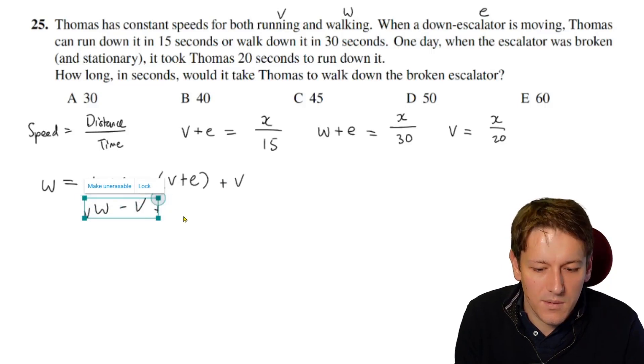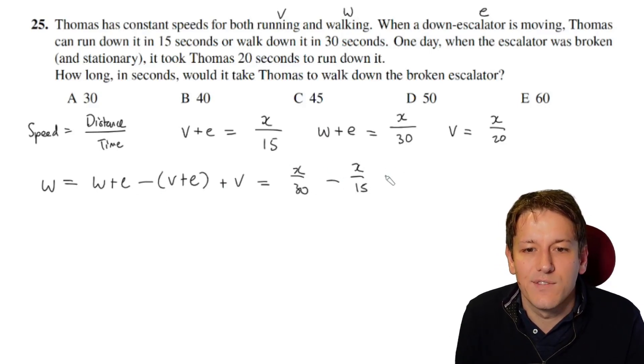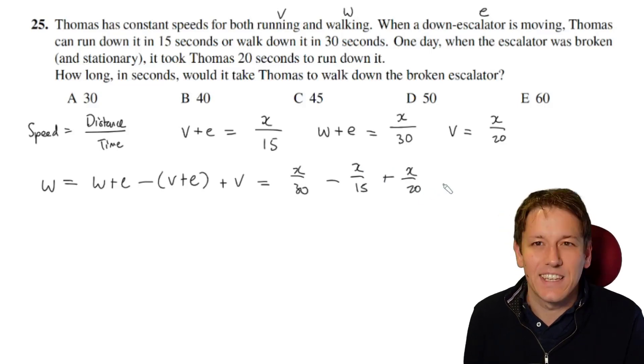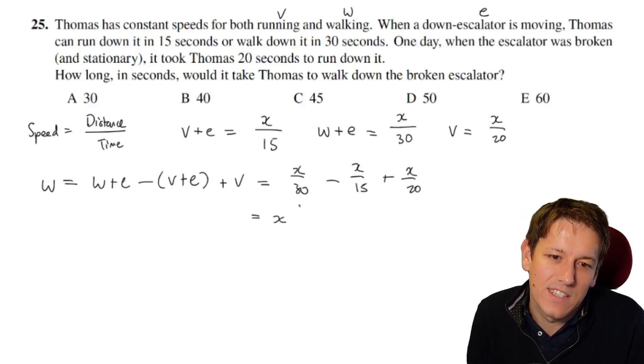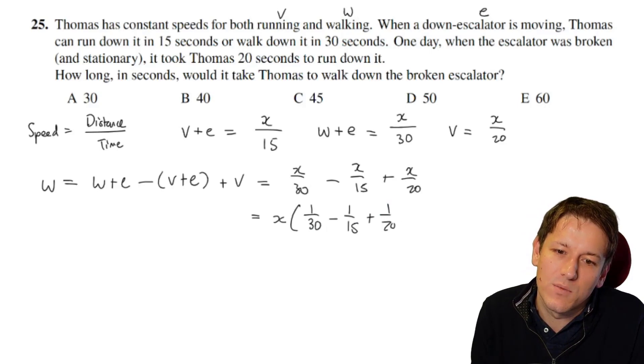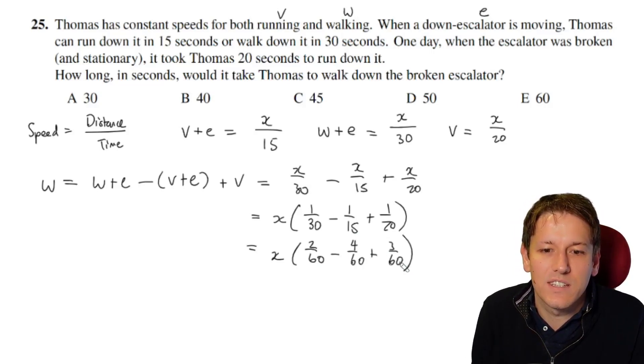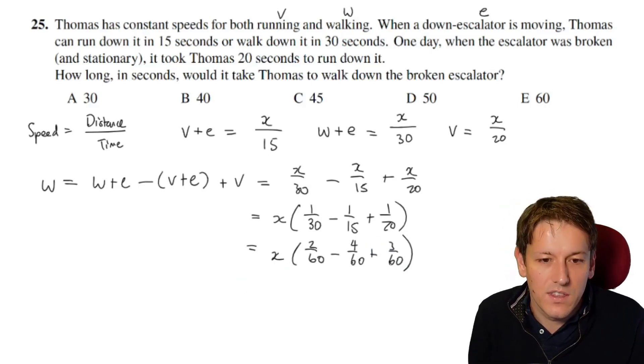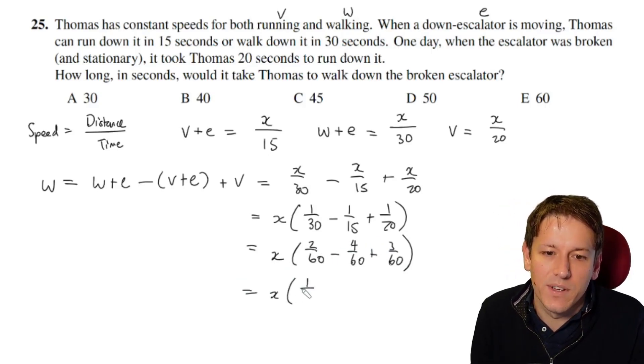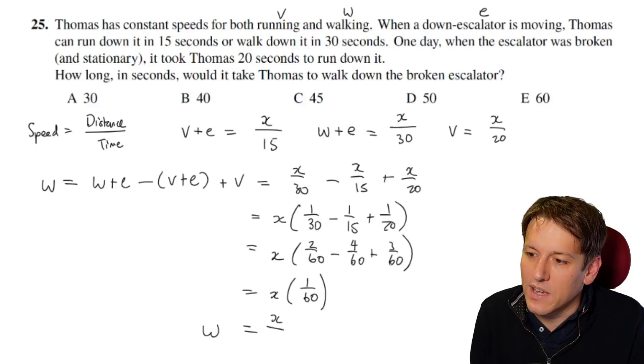But all of these things I know. So w plus e is x over 30, v plus e is x over 15, and v is x over 20. So again, as I said, x really doesn't matter here at all. I'm just going to factorize it out of this expression, in fact. So it's x times 1/30th minus 1/15th plus 1/20th. If I put all those over a common denominator, I'm going to get 2/60ths minus 4/60ths plus 3/60ths. 60 is the lowest common multiple of 15, 20, and 30. So that gives me x times 5 minus 4, or 1, 1/60th. So I've got that the walking speed is equal to x over 60.